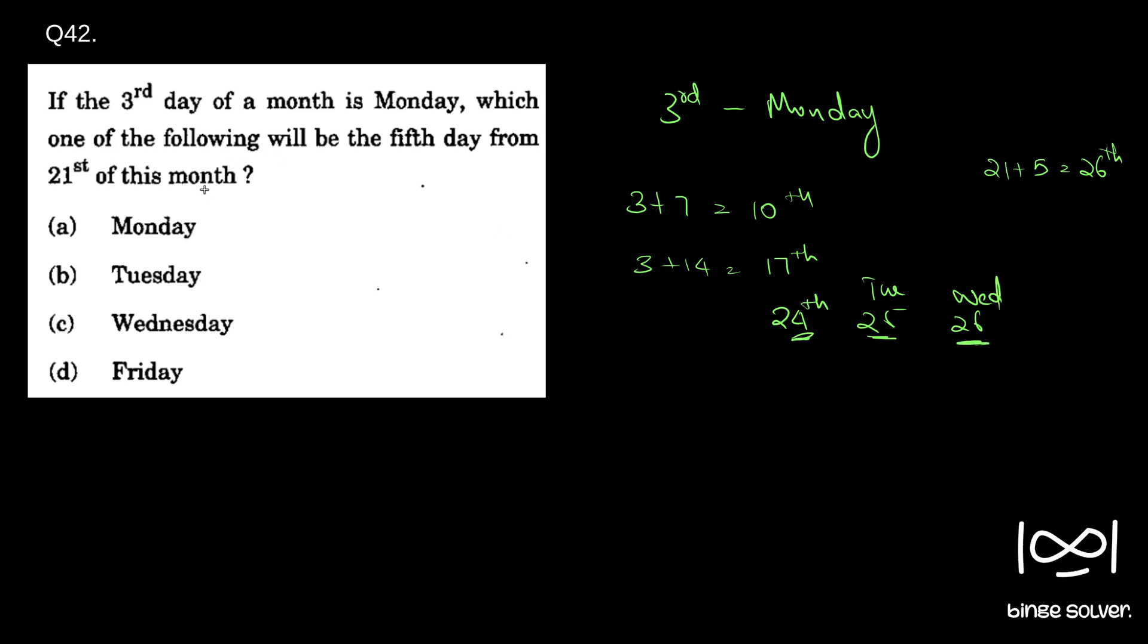That is, fifth day from the 21st of this month will be a Wednesday. So the solution is C. We can use this concept: if you add 7 to it, we will get the same day. So we use that to solve question 42. Solution is C.